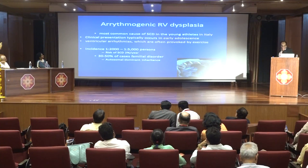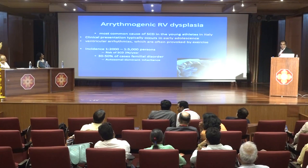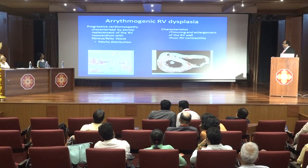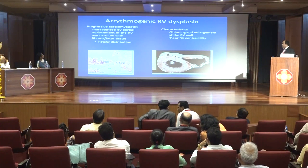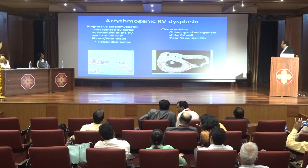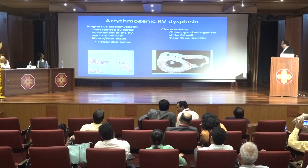30 to 50% of ARVD cases are familial with autosomal dominant inheritance. In arrhythmogenic RV dysplasia, there is a progressive partial replacement of the RV myocardium with fibrous and fatty tissues, leading to thinning and enlargement of the RV with poor contractility.